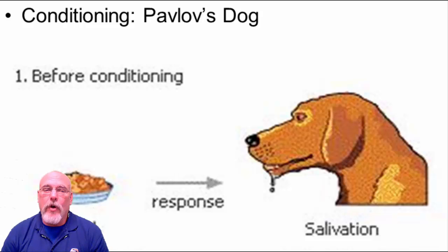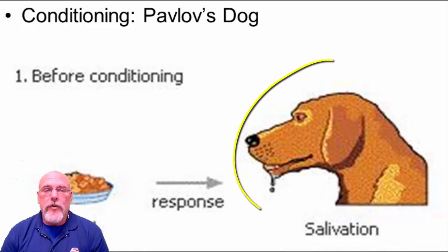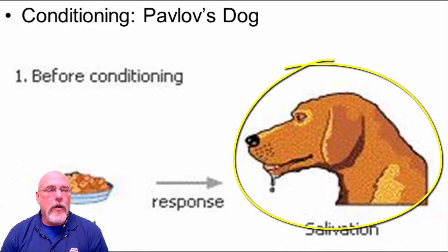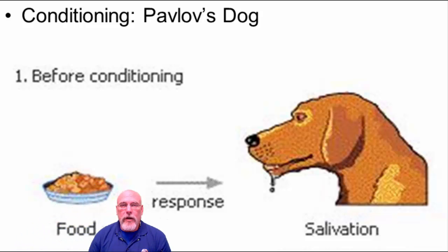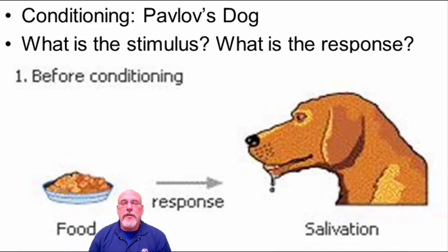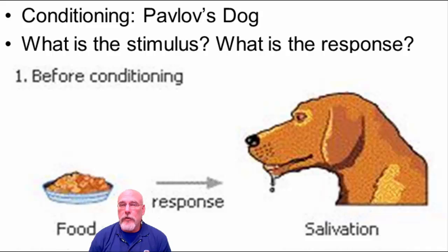It's known as Pavlov's dog. The experiment showed that when a dog was presented with food to eat, he would start to salivate — he would start to drool. That's a normal reaction that dogs have. So the stimulus is the dog either seeing or smelling the food, and the response is the dog drooling. Stimulus response.